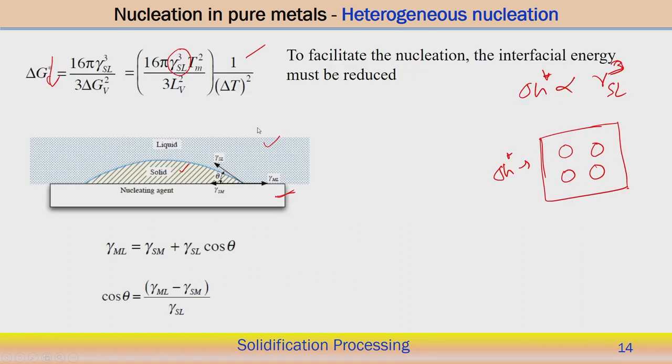Next time, we will try to discuss the different aspects of the heterogeneous nucleation process — the derivation and estimation of the Gibbs energy and critical size of the nucleus in the case of heterogeneous nucleation. That is all for today. Thank you very much.